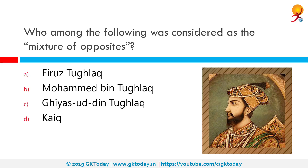Who among the following was considered the 'Mixture of Opposites'? The correct answer is Muhammad bin Tughluq. No ruler in medieval India has earned so much controversy regarding his character and policies as Muhammad bin Tughluq. He is called Mixture of Opposites because he took quick decisions which in some cases turned out to be wrong, and some of his plans looked so strange that they almost ruined the empire.